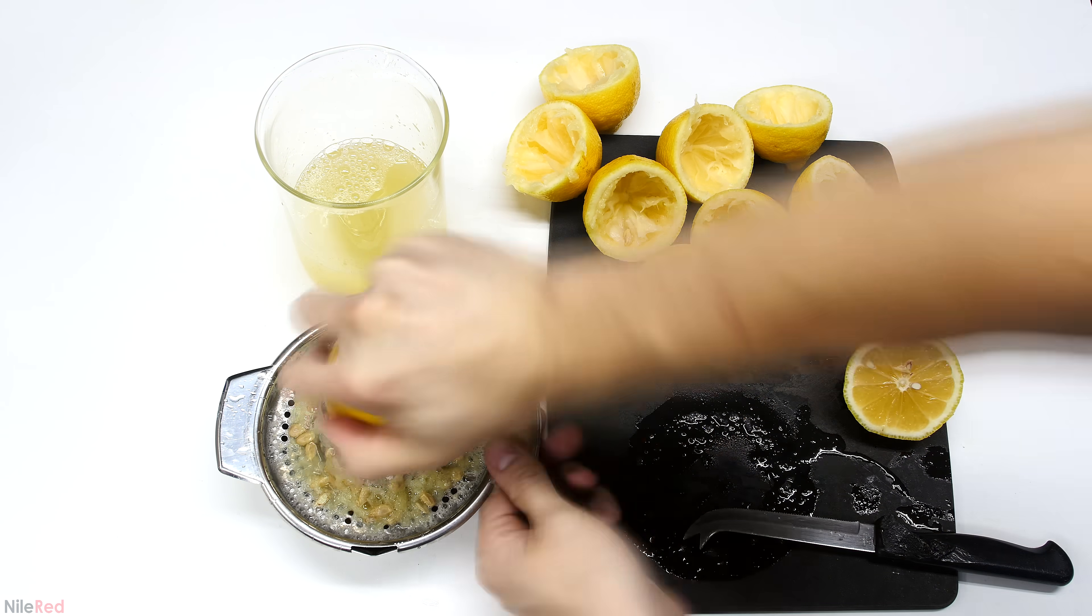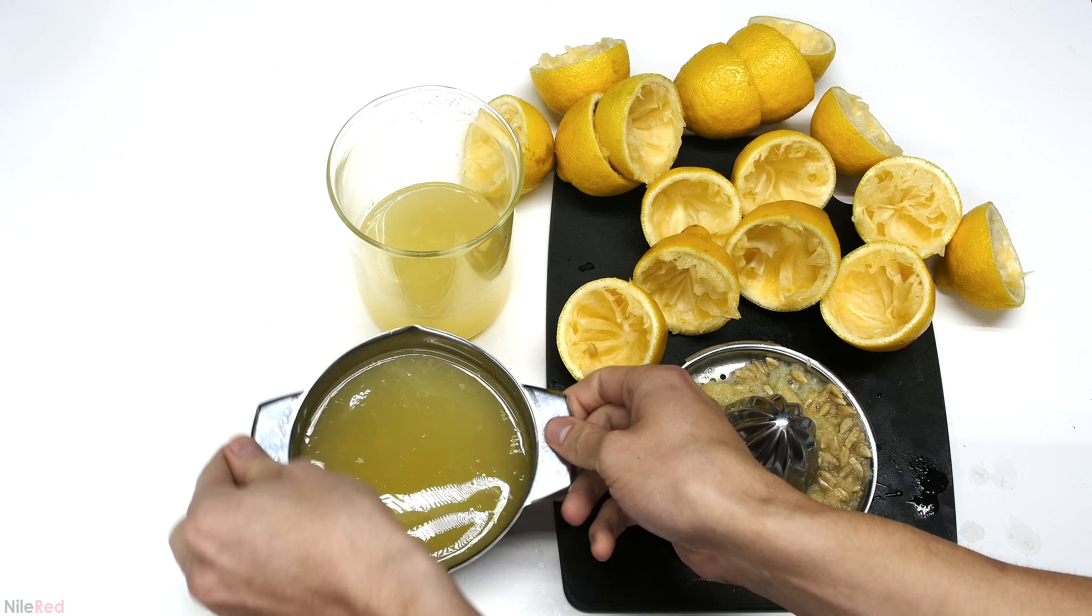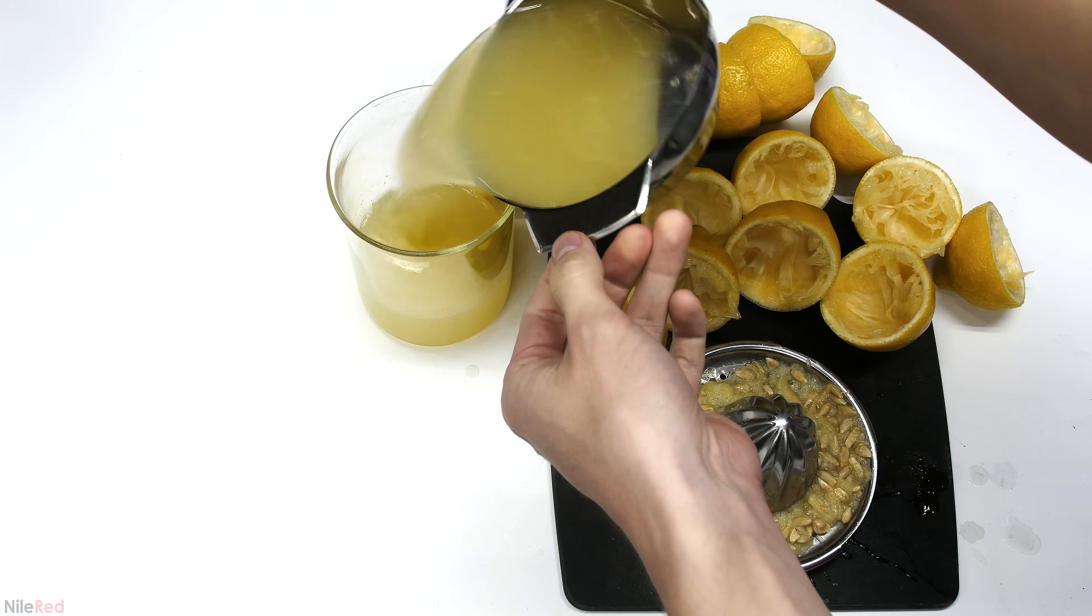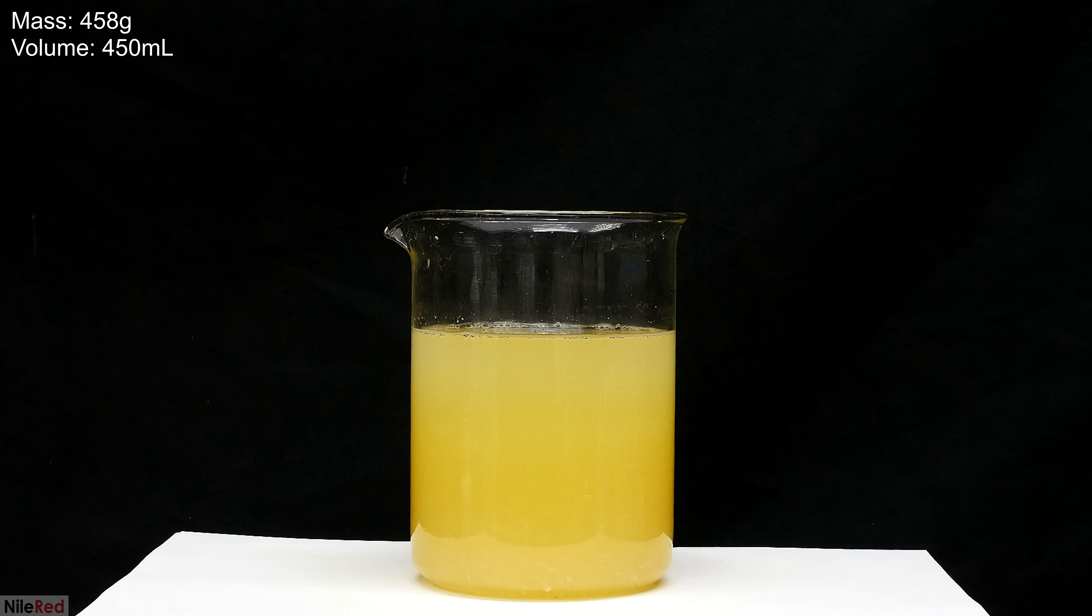I then continued things by chopping up and juicing the rest of the lemons. Once they had all been processed, I transferred the juice to the beaker. I cleaned things up and then I measured both the mass and the volume of the juice. The mass came out to be about 458 grams and the volume was about 450 milliliters.